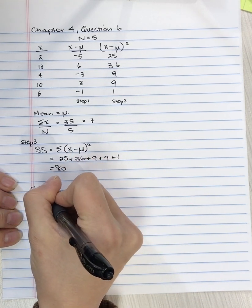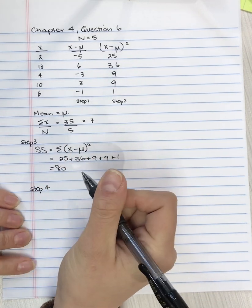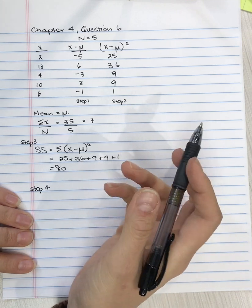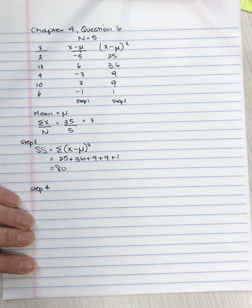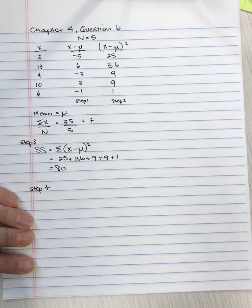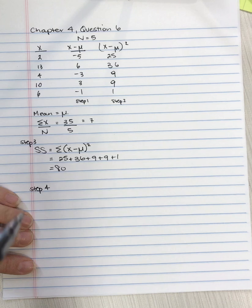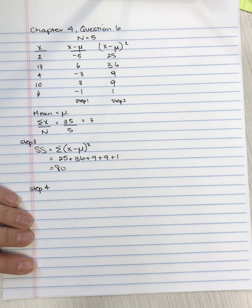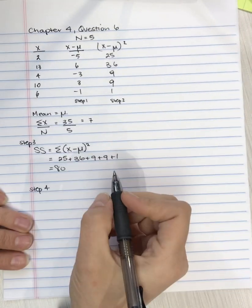The last step is step 4. Well no, I suppose there's 5 steps. We're going to find the variance in step 4, and we'll find the standard deviation in step 5. So for step 4, this is where we need to be careful about whether or not we have a population or a sample. So for step 4, we have a population, so we're going to calculate the variance.